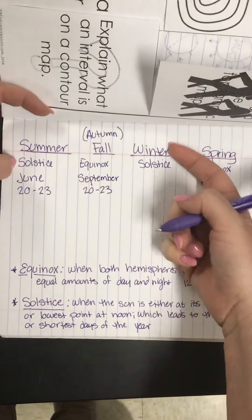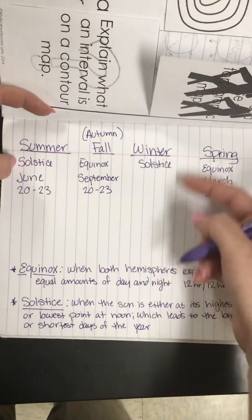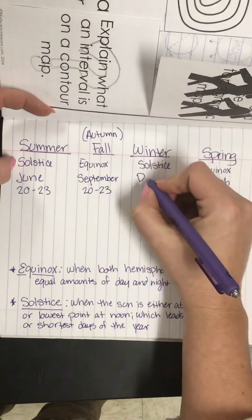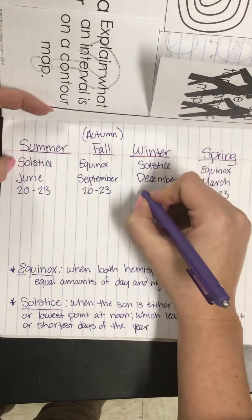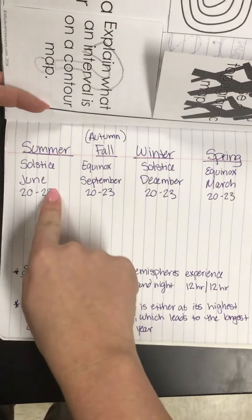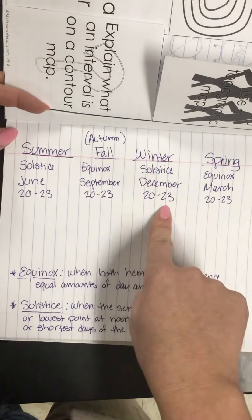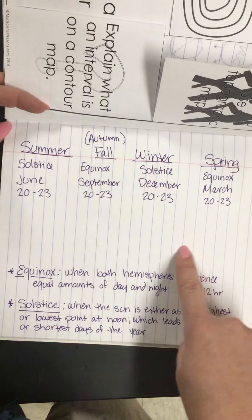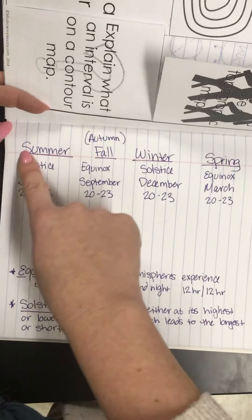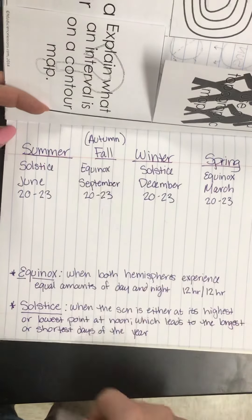The winter solstice is the darkest day of the year — you have the most nighttime hours — and that happens in December, again sometime between the 20th and the 23rd. So the cycle goes: summer solstice has the most daytime, fall equinox they're equal, winter solstice is the shortest day of the year, then spring equinox where they're equal again. Right after spring we shift to summer with the most daytime, and it just cycles over and over every single year.